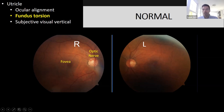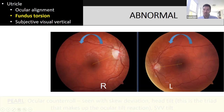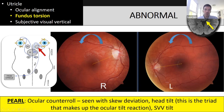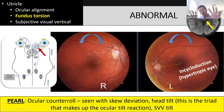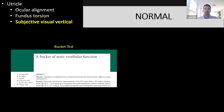Fundus torsion: with a non-mydriatic fundus camera, you can snap a photo and measure the angle between the fovea and the optic nerve. This six-year-old had a stroke involving the interstitial nucleus of Cajal — part of the utricle-ocular motor pathway — with a big left hyper, big right head tilt, incycloduction of the left eye, and excycloduction of the right eye. This ocular counter-roll is easily picked up with fundus photos and is usually seen together with skew deviation, head tilt, and other features of the ocular tilt reaction.